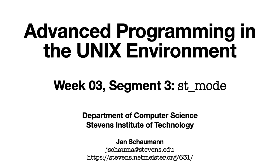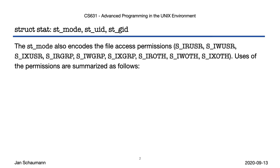Hello, and welcome back to CS631, Advanced Programming in the Unix Environment. This is week 3, segment 3, where we're looking at how the permissions defined in the struct stat st_mode are applied. Remember from our previous segment that the process has both an effective as well as a real UID, and an effective as well as a real GID associated with it, and that it is the effective UID that is used to determine access.